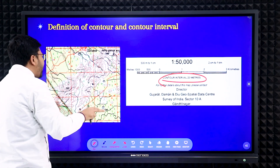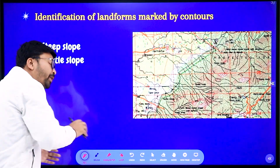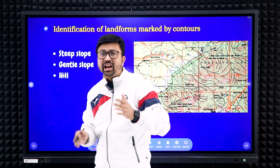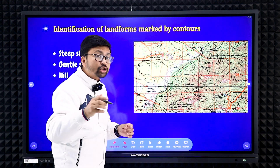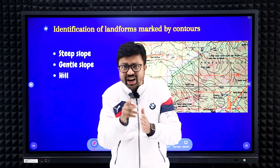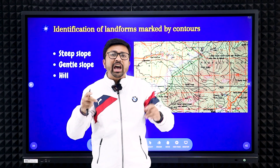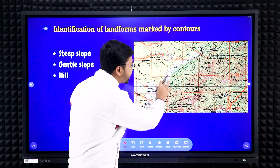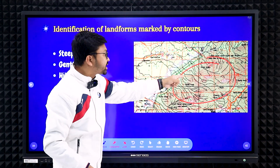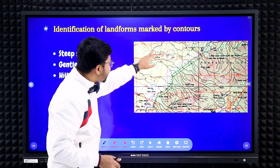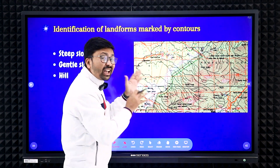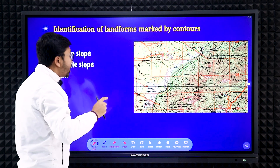Now for slope identification: steep slope, gentle slope, and hill. If the brown contour lines are close together (congested), it means steep slope. If the contour lines are far away from each other, it means gentle slope. Here you can see this part where the brown lines are very congested — that is a steep slope. On this other side, the contour lines are far apart, meaning gentle slope.